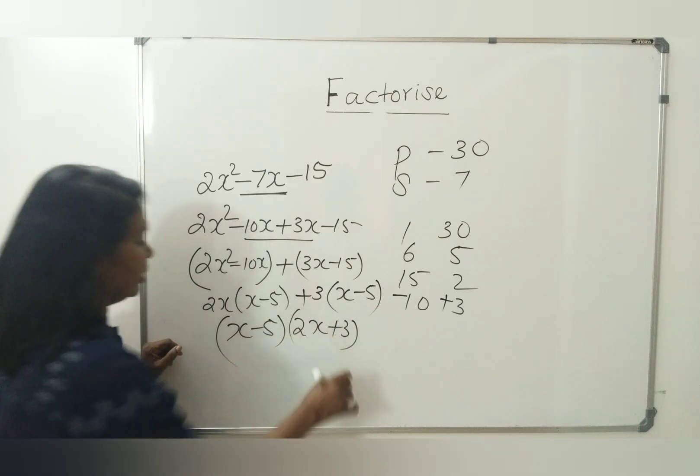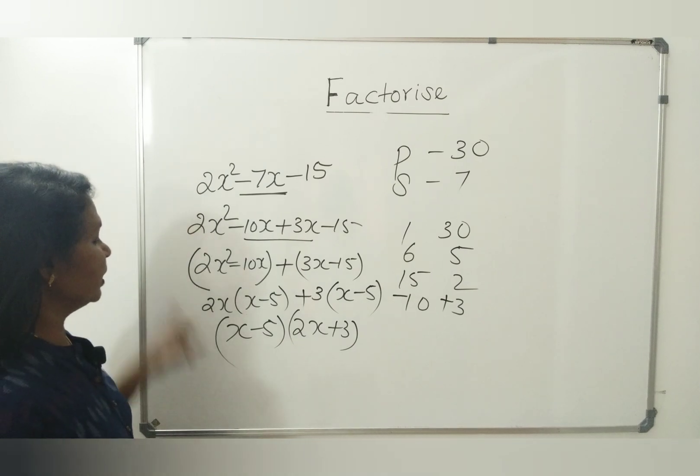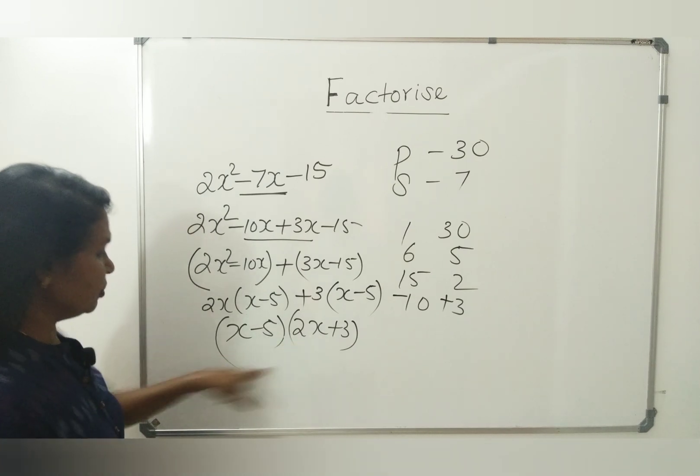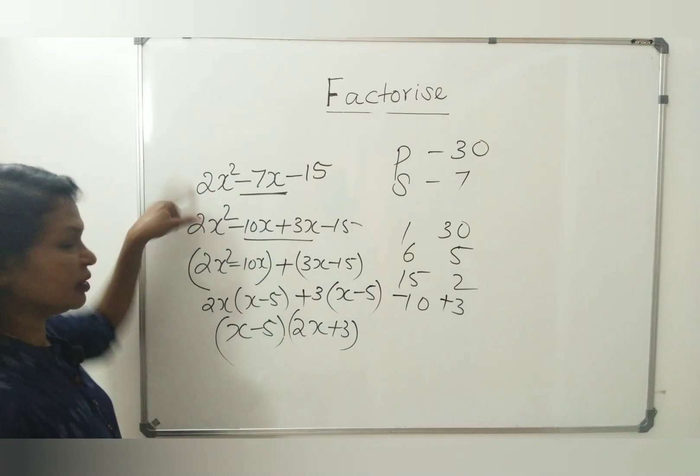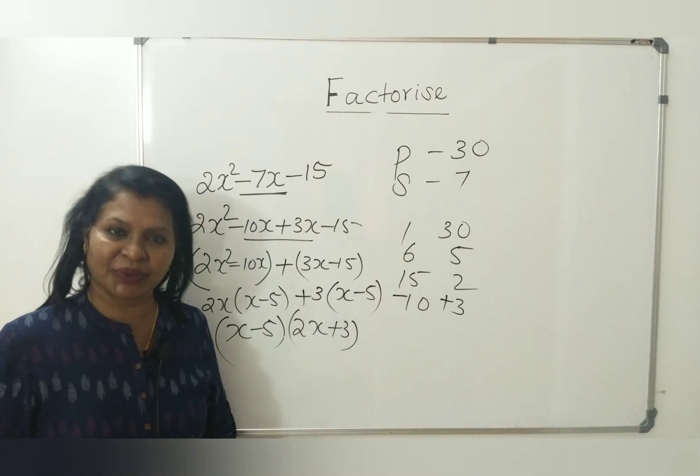Again, x minus 5 is common, into 2x plus 3. This is the answer. We get two factors: (x minus 5) and (2x plus 3). These are called the factors.